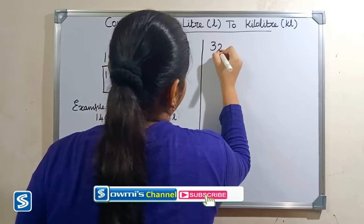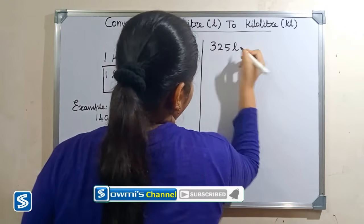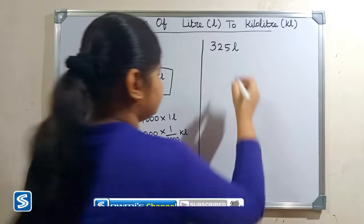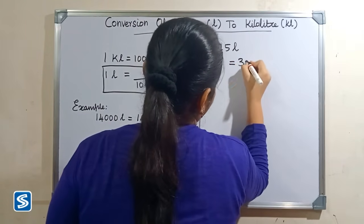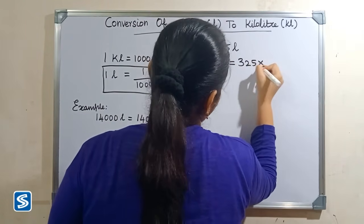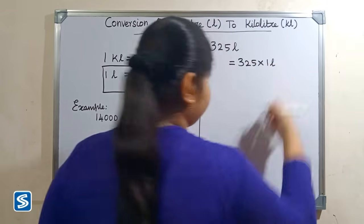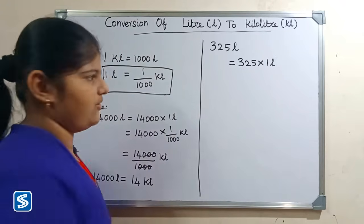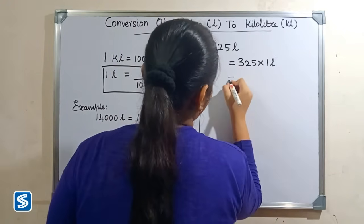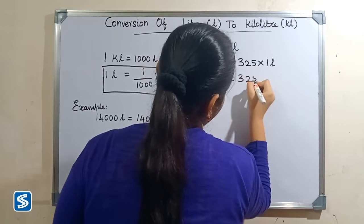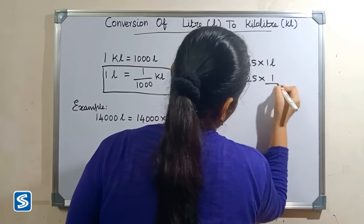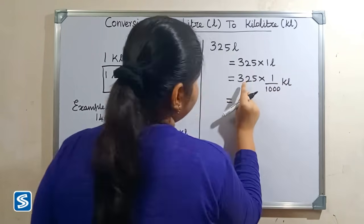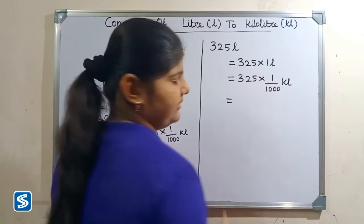Next we will take another example: three hundred and twenty-five liters. Three hundred and twenty-five liters can be written as three hundred and twenty-five multiply one liter. Now we substitute one by one thousand kiloliters in place of one liter, giving us three hundred and twenty-five multiply one by one thousand kiloliters.